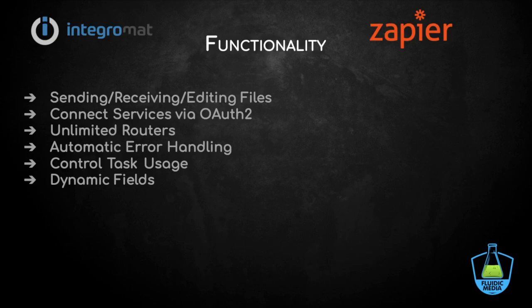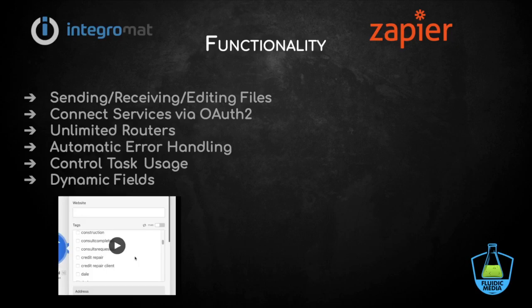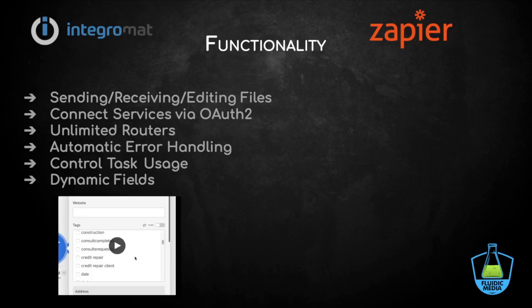Integromat also gives us the ability to control task usage — basically a rate limiter — so we can control how many operations are happening on a day-to-day or monthly basis. Whereas with Zapier, you're at its mercy as to when and how quickly it's processing data. Lastly, Integromat has dynamic fields: when inside a module with our Go High Level account connected, it pulls all our data directly into Integromat, making the building process quicker and simpler — including all tags, custom fields, and custom values for that client.